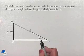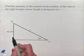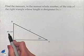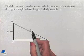Here we have a right triangle where we're given the measure of an angle, we're given a length opposite that angle, and we're trying to find the length of the hypotenuse.